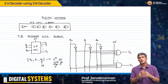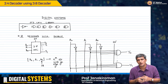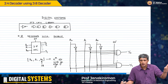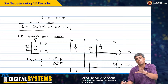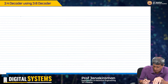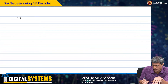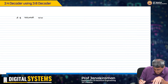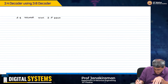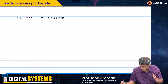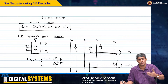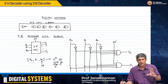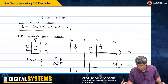Sometimes, having built a 3-to-8 decoder, we would want to do one of two things: implement a smaller decoder using this 3-to-8 decoder, or implement a higher decoder using it. Let us start with the simpler problem — implementing a 2-to-4 decoder using a 3-to-8 decoder. There are times when you might want to do this for convenience, when delay and area are not critical concerns.